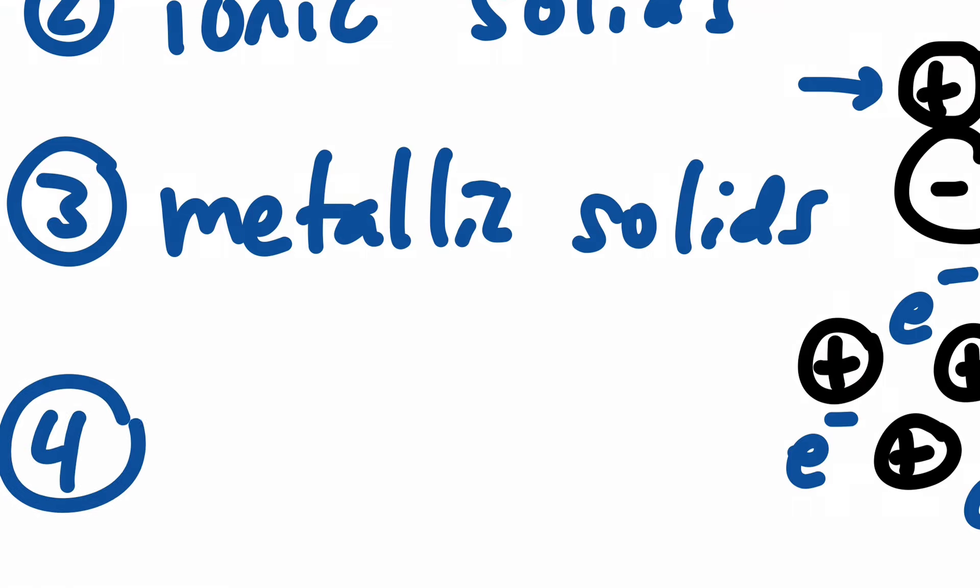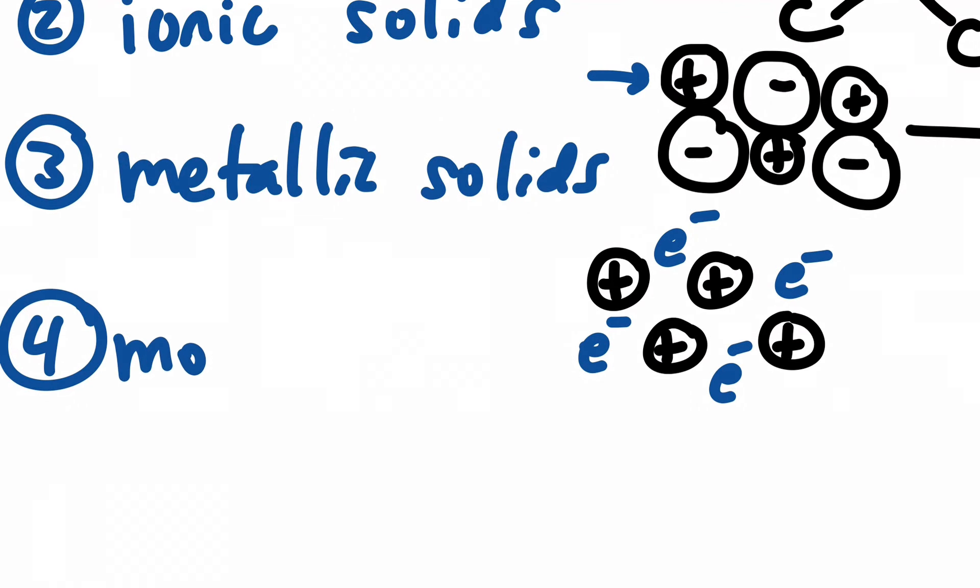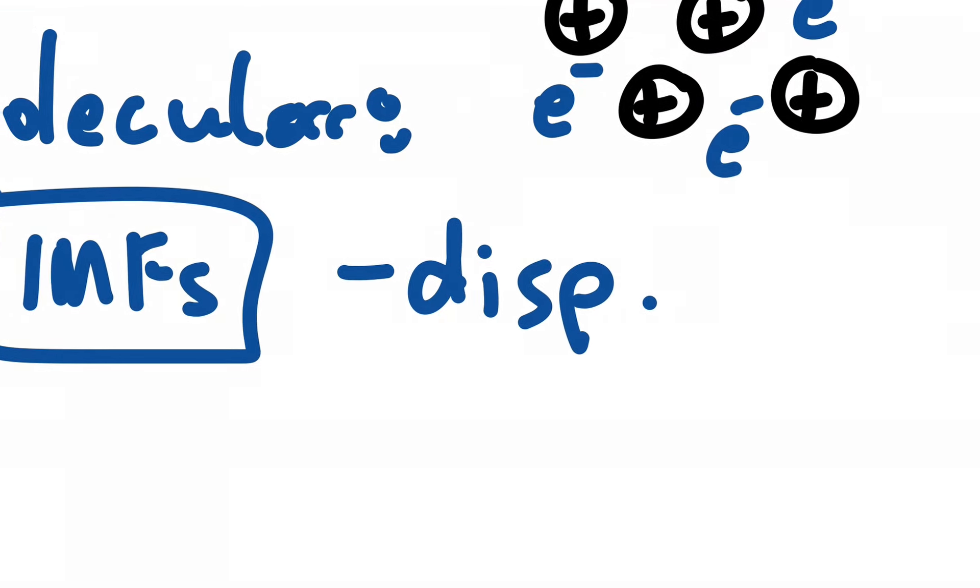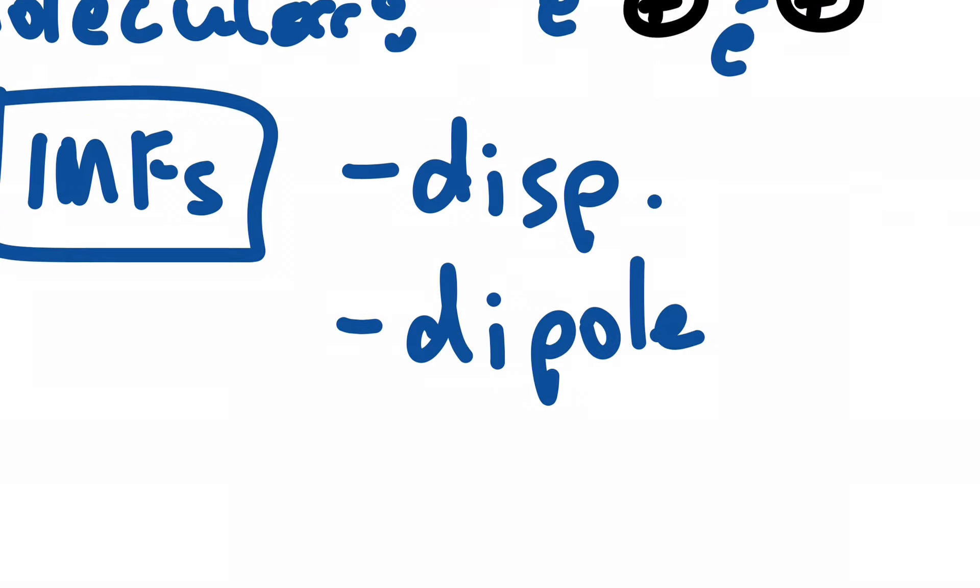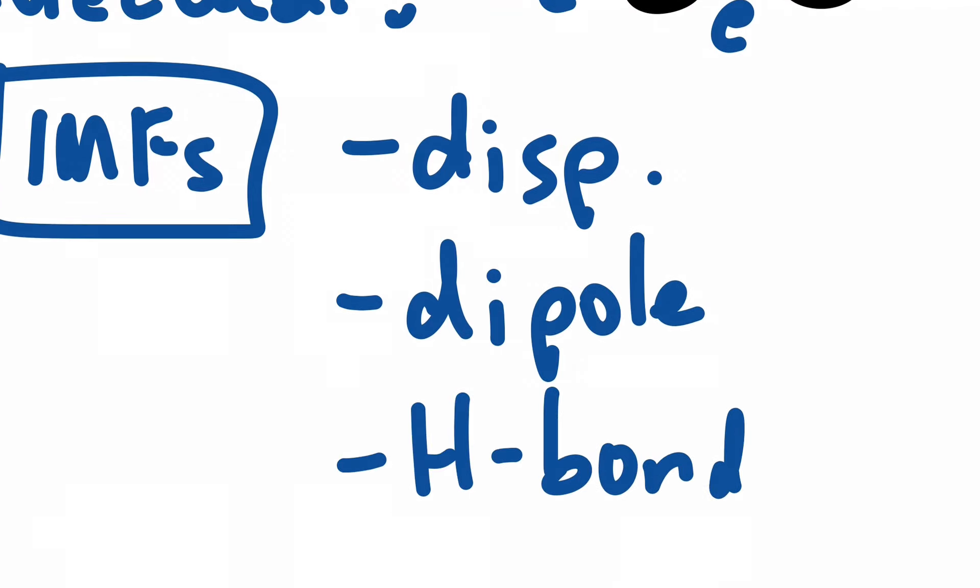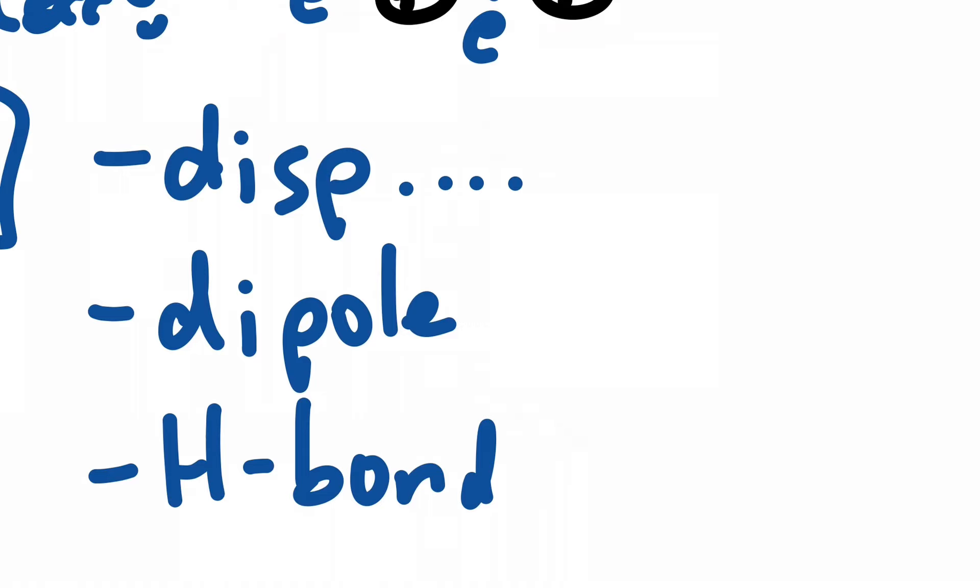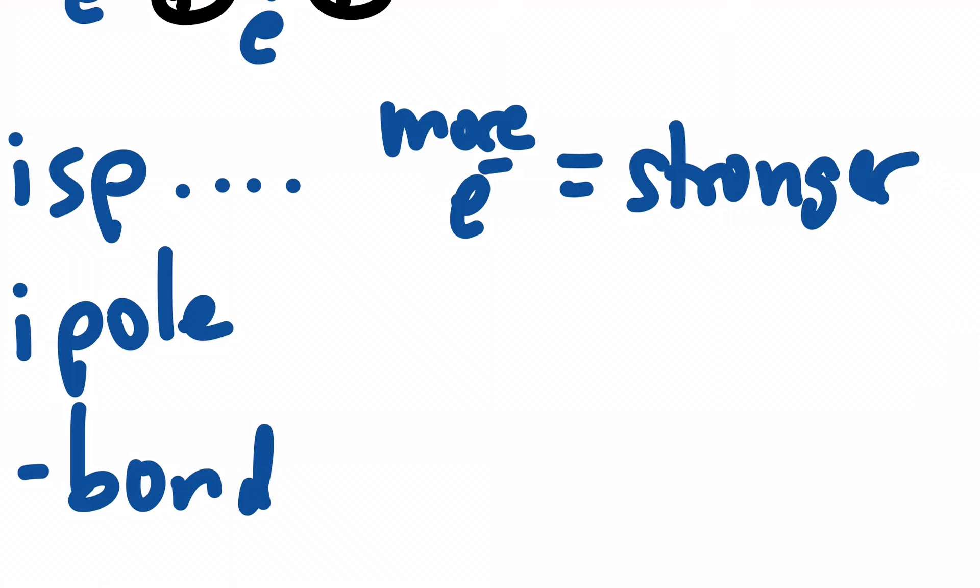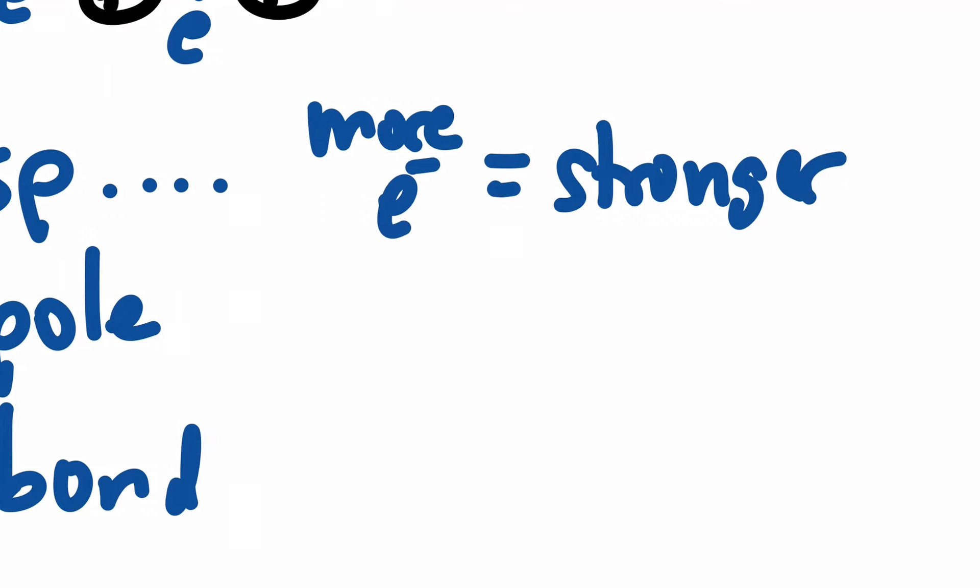Then the last one, but perhaps the one you've seen the most, are molecular substances. If something is molecular, then we have to talk about its intermolecular forces, its IMFs, of which there are three: the dispersion forces, the dipole-dipole forces, and the H-bonding forces. Dispersion forces are with every molecule. The more electrons you have, the stronger. So big molecules with lots of electrons, proteins, waxes, giant plastics, have a lot of electrons. They have very strong intermolecular forces as a result. So they have things like high boiling points and melting points.